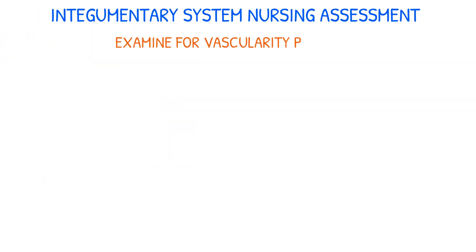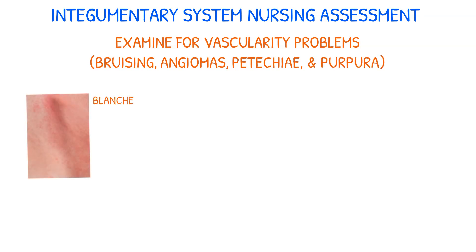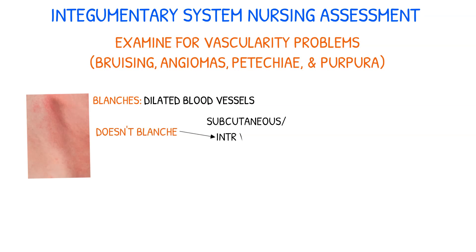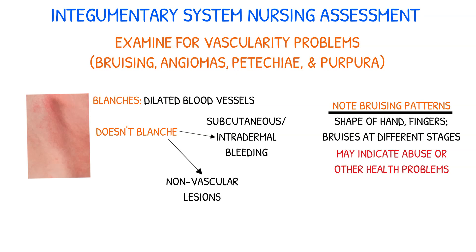Examine the skin for possible problems related to vascularity, such as bruising and vascular and purpuric lesions like angiomas, telangiectasia, and purpura. Note the reaction to direct pressure. If a lesion blanches on direct pressure and then refills, the redness is due to dilated blood vessels. If it doesn't blanch and the discoloration remains, it's the result of subcutaneous or intradermal bleeding or a non-vascular lesion. Note patterns of bruising such as the shape of the hand or fingers, or bruises at different stages of resolution, which may indicate abuse or other health problems.